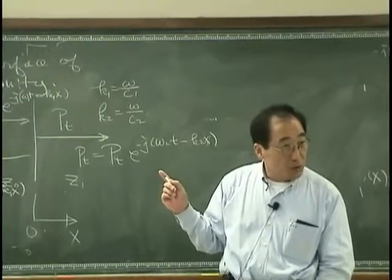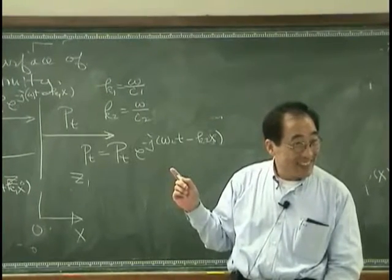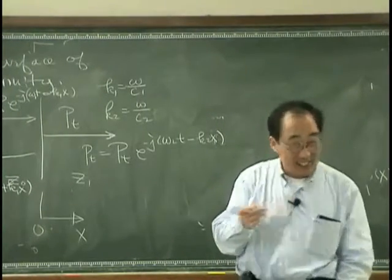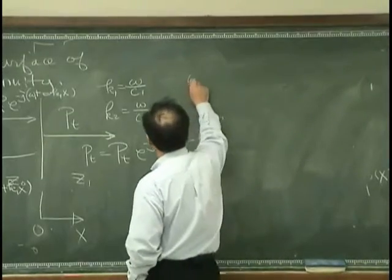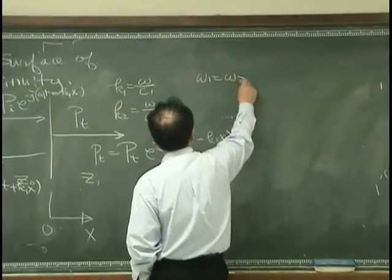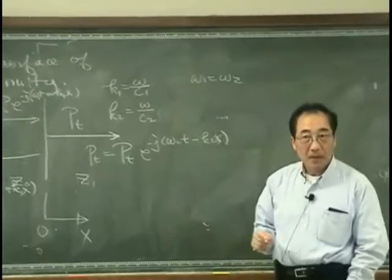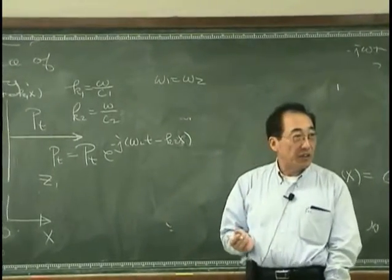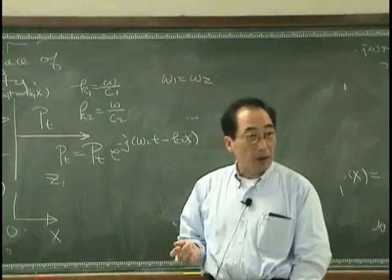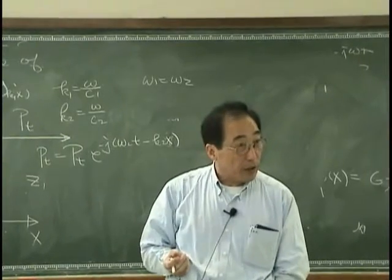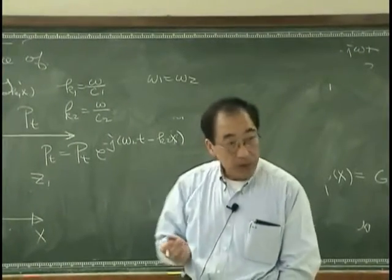And therefore, omega 1 has to be omega 2. Now you are aware, right? So omega 1 is omega 2, but that does not say anything about the equality between k1 and k2.